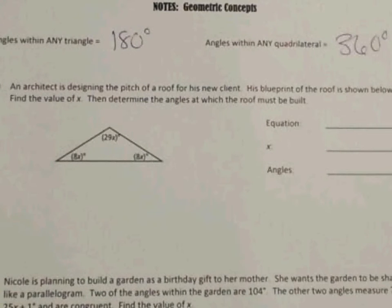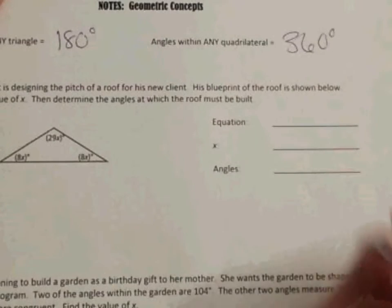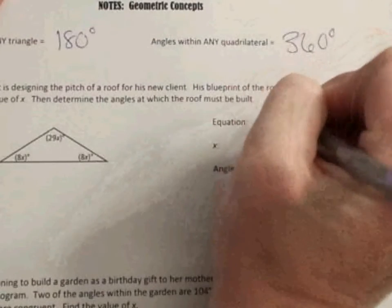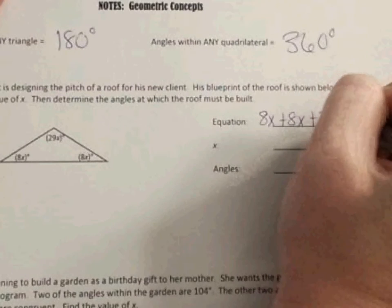Find the value of x, then determine the angles at which the roof must be built. So we have several things we're going to do. We need to solve for x, but then we need to go back and apply what we know for x and actually find the measurement of each angle.